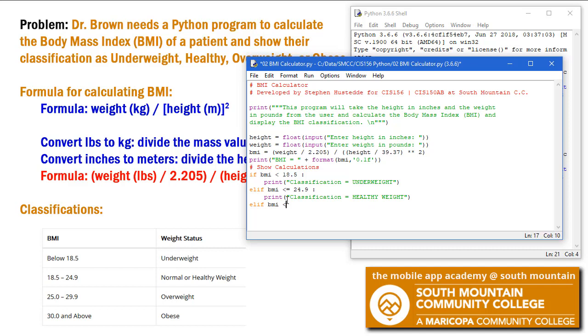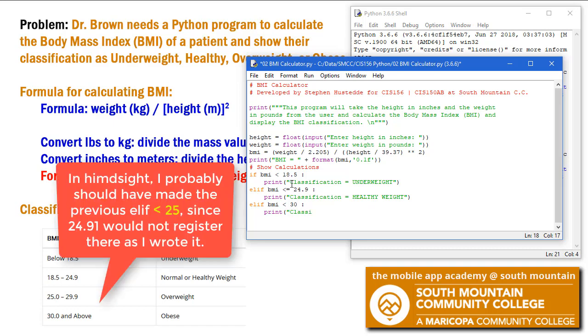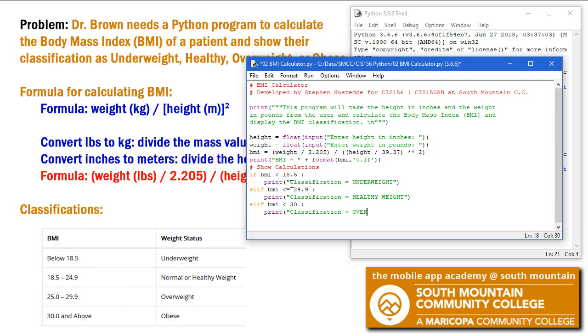So now we're going to say BMI is less than or equal to, let's just say less than 30. Because 30 and above is going to be obese. And we'll print classification equals overweight.